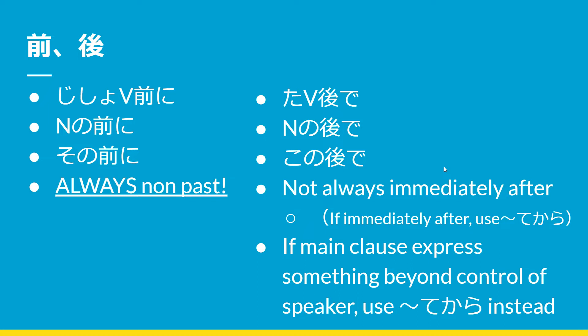前に使う時には、辞書形を使います。We always use the non-past — the dictionary form. Why? Because it's something that you do before something else, so obviously it's a future action. 辞書 form verb 前に. You wouldn't use the negative form because you're not going to say 'before I don't do something' — that doesn't make sense. So we have 辞書 form verb 前に, or の前に, or その前に.